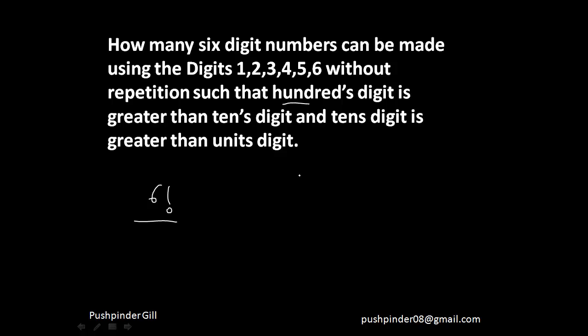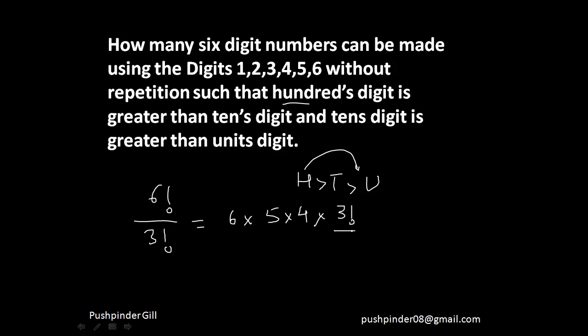The hundreds digit has to be greater than the tens digit, and the tens digit has to be greater than the units digit — which means indirectly the hundreds digit also has to be greater than the units digit. So these 3 numbers cannot interchange their positions, meaning those 3 things are identical. They can arrange themselves in 3 factorial ways. So the answer is 6 factorial divided by 3 factorial, which equals 6 into 5 into 4, giving 120 such numbers. Easy, isn't it?